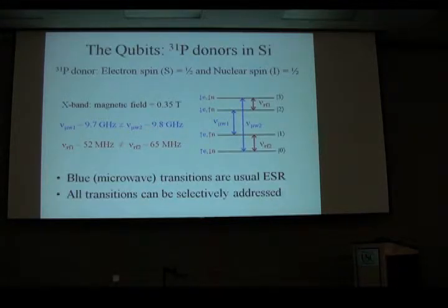So the qubits that we are working with are phosphorus-31 donors in silicon. Relatively lightly doped silicon. In fact, most of what I'm going to be showing you is done on one piece, that is, has a density of phosphorus just a little below 10 to the 15 per cubic centimeter. This is also isotopically purified silicon. So it's silicon-28. So we've gotten rid of nearly all the nuclear moments.